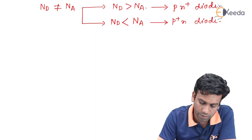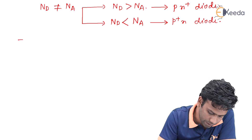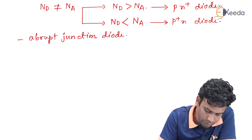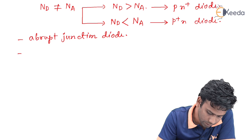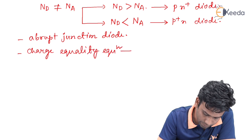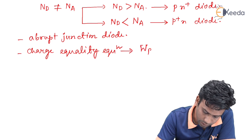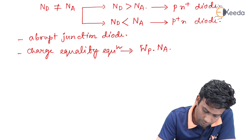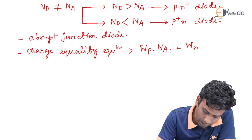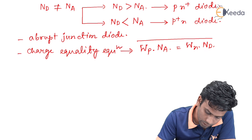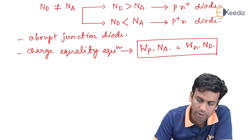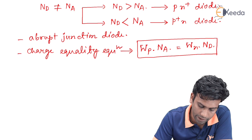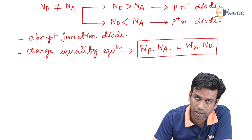These types of diodes are called step graded junction diodes, or abrupt junction diodes. Now, the charge equality equation gives us: W_P × N_A = W_N × N_D. This is the charge equality equation of the depletion region, where W_P is the depletion layer width in the P side and W_N is the depletion layer width in the N side.